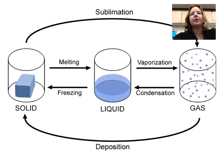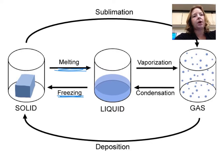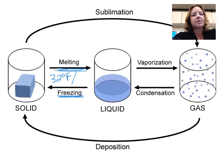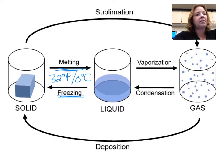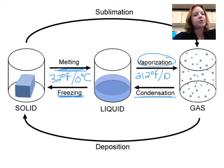Below this graph, I'd like you to draw out the different phase changes — you should know all six of these. Hopefully this is mostly review. Going from a solid to a liquid is called melting, and from a liquid to a solid is freezing. You should also know the temperatures that water does these at: 32 degrees Fahrenheit or 0 degrees Celsius. Going from a liquid to a gas is vaporization, and from a gas back to a liquid is condensation, which for water happens at 212 degrees Fahrenheit or 100 degrees Celsius.